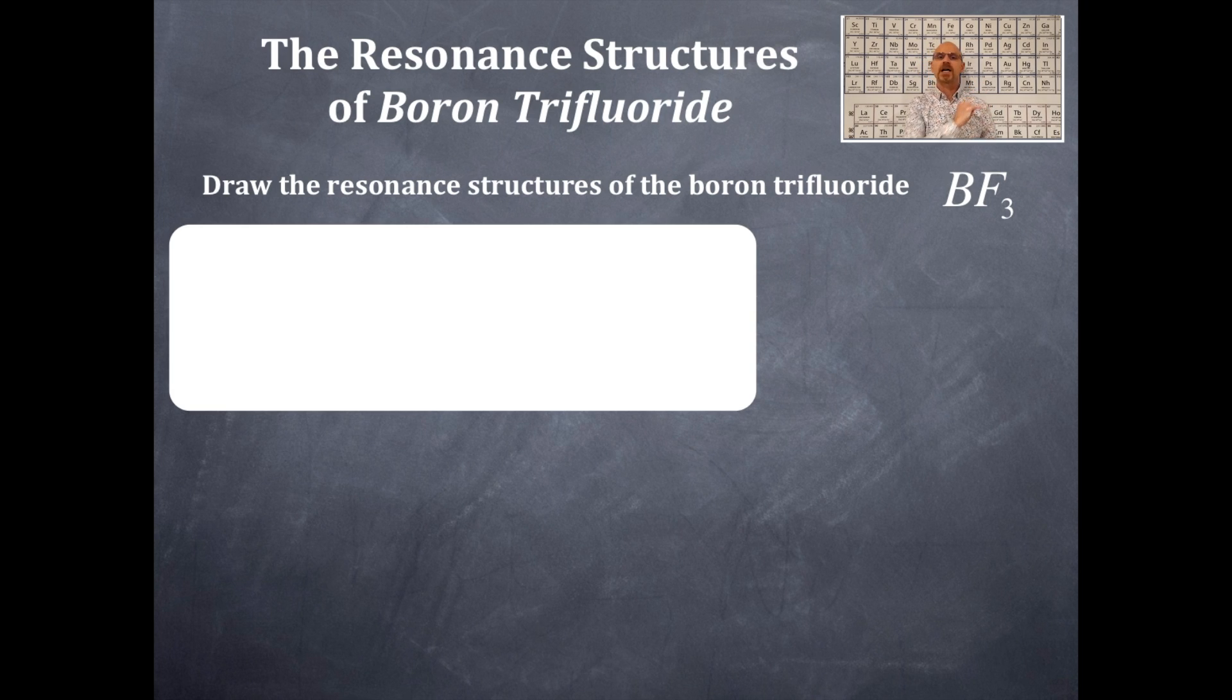You're going to look on your periodic table, get three valence electrons for boron. There's one of those. There are seven valence electrons for fluorine. There's three of those. You're going to multiply the three and the seven, add the three for the boron, sum those up, divide by two and get the total number of pairs of electrons.